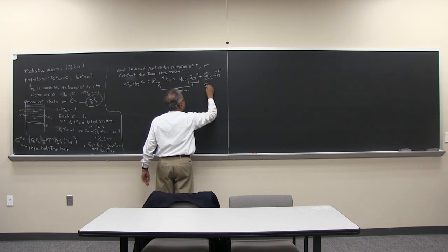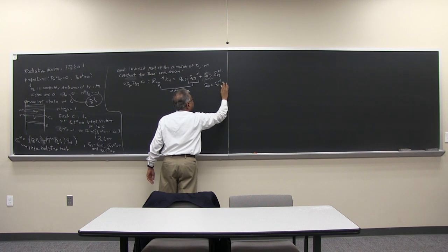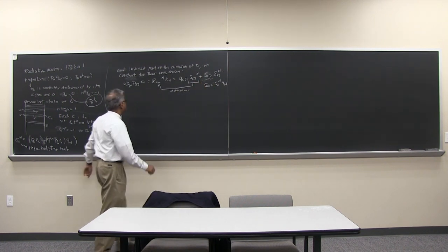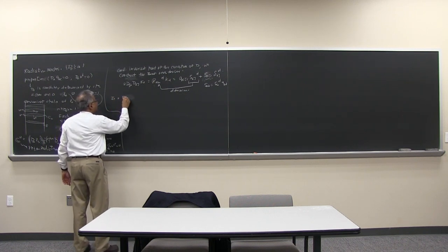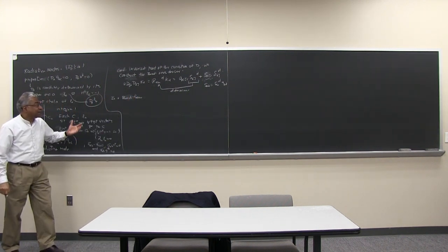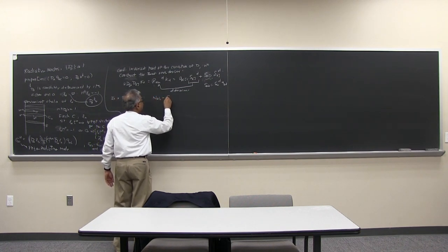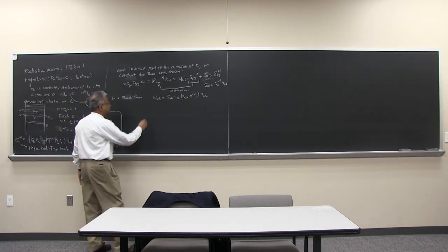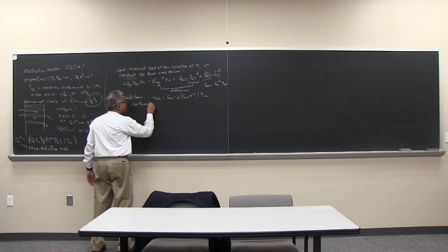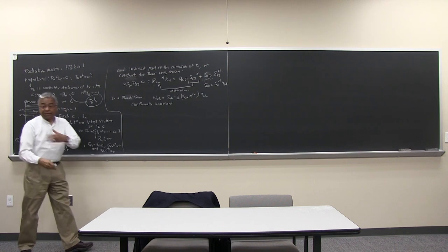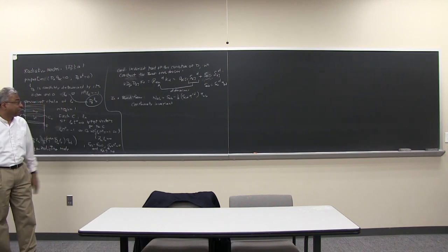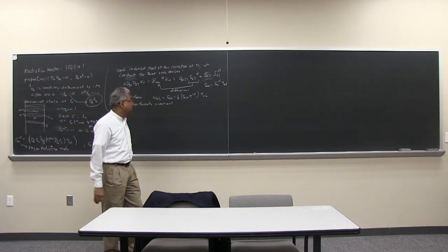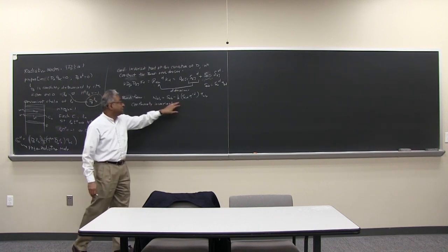In the Bondi frame, the news tensor is given by S_{AB} minus one-half of S_{AB} Q^{CD} — that is the Bondi news — and the statement is that this is a conformal invariant. If you choose one Bondi frame you get one answer; somebody else chooses another Bondi frame within the three-parameter family of conformal frames, the statement is that you're not changing this news tensor.